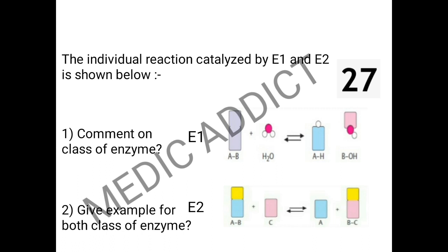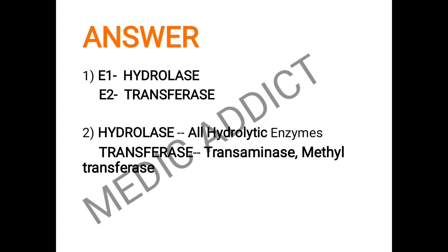In the case of enzyme E2, the reactants A-B and C react to give A and B-C as separate products. The coloring signifies that A and B have split, with molecule B being transferred to C, while A is released separately as a product. So E1 is the hydrolysis enzyme and E2 is the transferase enzyme. Examples of hydrolysis enzymes include pepsin, trypsin, and chymotrypsin. Examples of transferase enzymes include transaminase, which transfers amino groups, and methyl transferase, which transfers methyl groups.